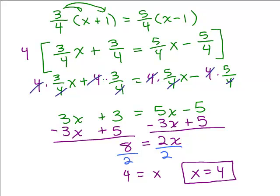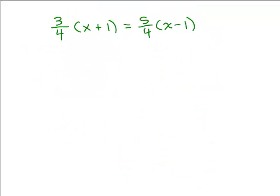So let's start this problem over. Just keep in mind what I did is I distributed that 5 fourths. We're going to do it over where we're going to eliminate the fractions first. So I've got fractions on both sides and 4 is the denominator so the least common denominator is 4. So I'm going to multiply both sides by 4.